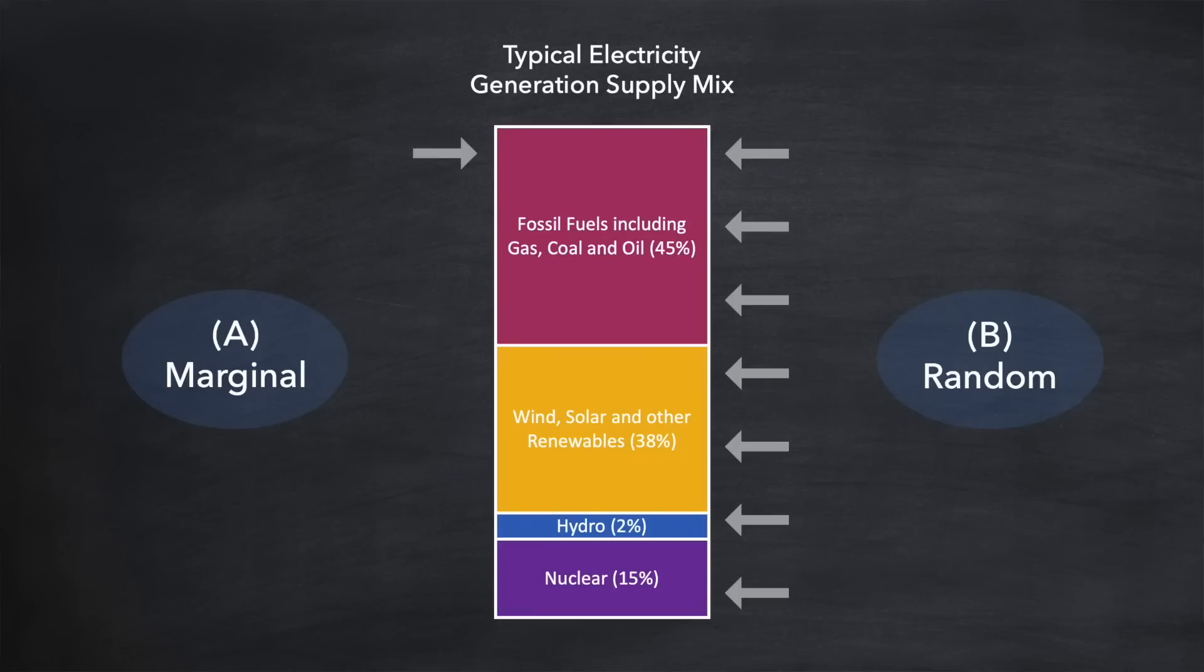Now I don't know for sure which of these two scenarios is more accurate. Maybe you could let me know your own thoughts in the comments. How about we look at the impacts of both scenarios then, starting with A.